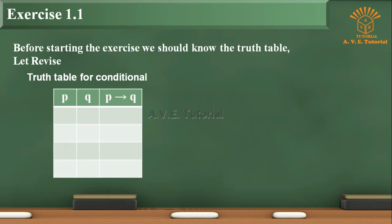Truth Table for Conditional. First row: P, Q, P implies Q. Second row: T, T, T. Third row: T, F, F. Fourth row: F, T, T. Fifth row: F, F, T.